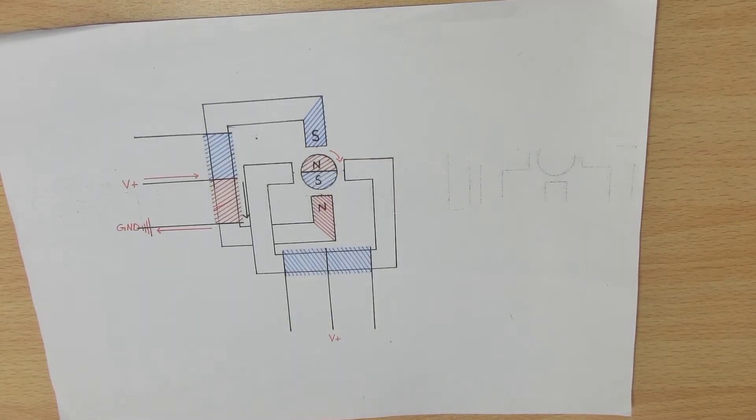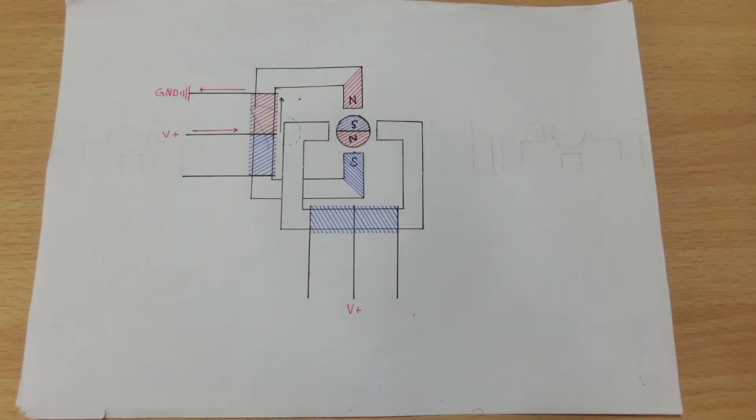Now the rotor has completed one rotation. From this graphic we have learnt that one rotation of the unipolar stepper motor consists of connecting the coils to ground in this pattern: A1, B1, A2, B2.